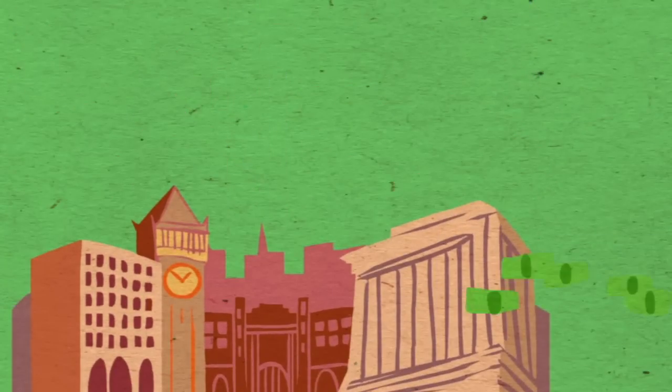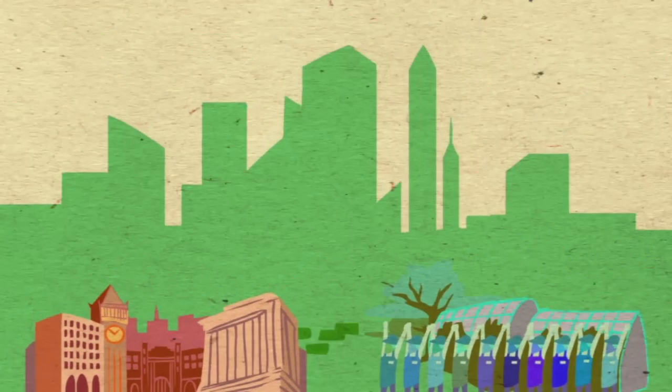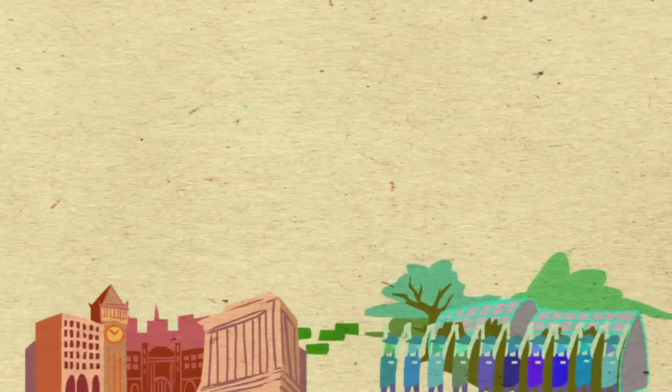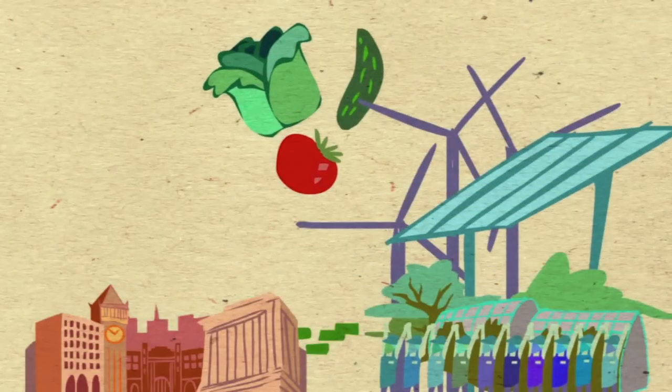The anchor institutions buy things like clean power and local produce from the cooperatives. This was money they needed to spend anyway, but now they not only get the sustainable goods and services they need, they are also helping build jobs in their neighboring communities.